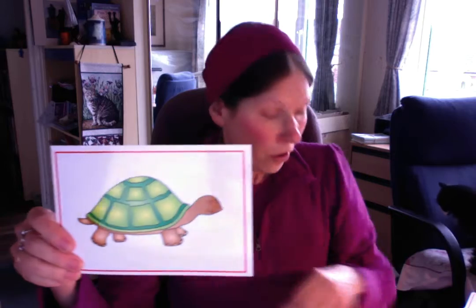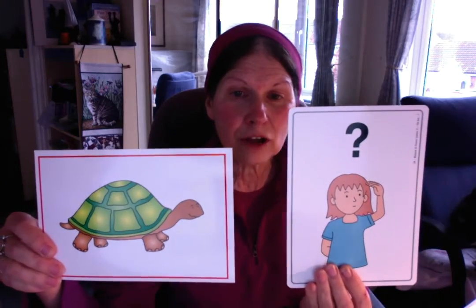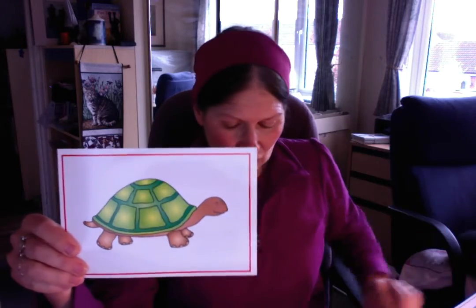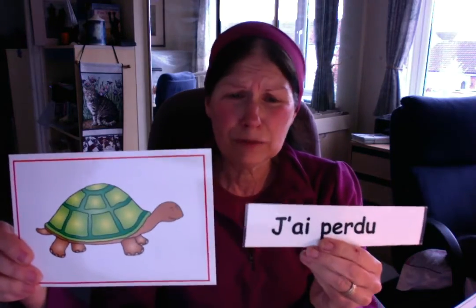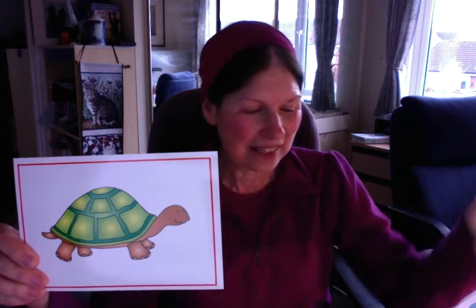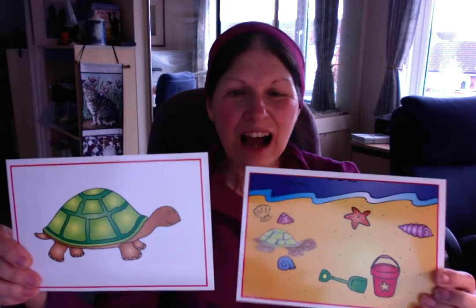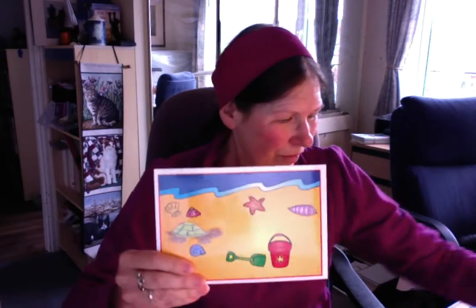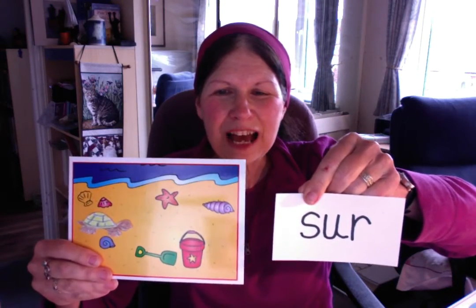Now, mon chat was masculine. What about 'une tortue'? Alors, if I go: Où est ma tortue? Je ne sais pas. J'ai perdu ma tortue. J'ai trouvé ta tortue. Alors this is feminine — féminine. Alors, elle est... elle est sur la plage.